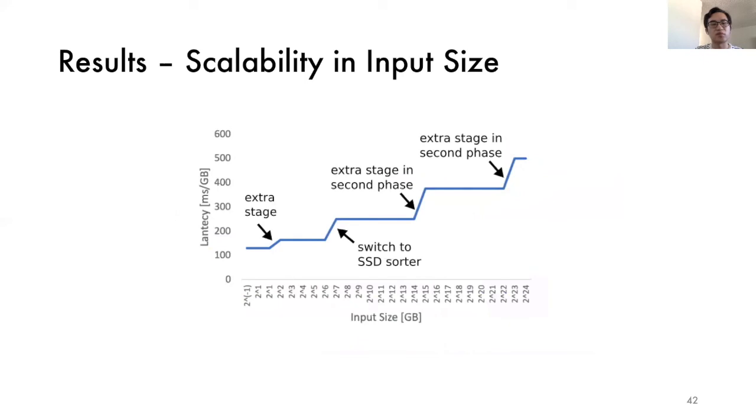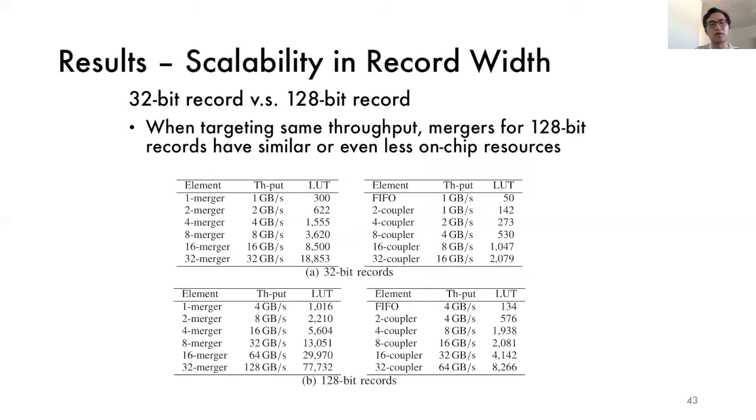With the systematic approach we propose, we can now form a big picture of how the performance looks like when the size of datasets ranges from gigabyte to terabyte scale using a single FPGA based merge sorter. As we can see, the performance decreases at four distinct points. The first point comes when there is one more merge stage in DRAM sorter. The second point comes when we switch from DRAM sorter to SSD sorter to accommodate a larger dataset. The third and fourth points come when there are more merge stages in SSD sorter as the dataset becomes even larger. We also measure the scalability in record width of our design by comparing the 32-bit record and the 16-byte records. We find that when targeting the same throughput, mergers for 16-byte records have very similar or even less on-chip resources, which indicates our designs have good scalability for different record widths.